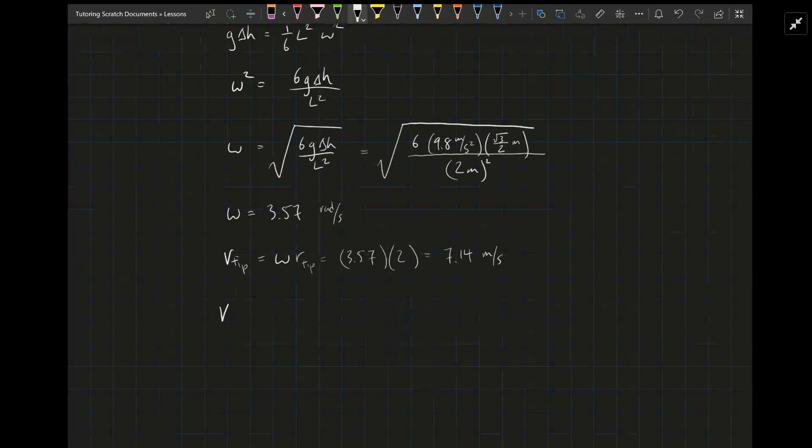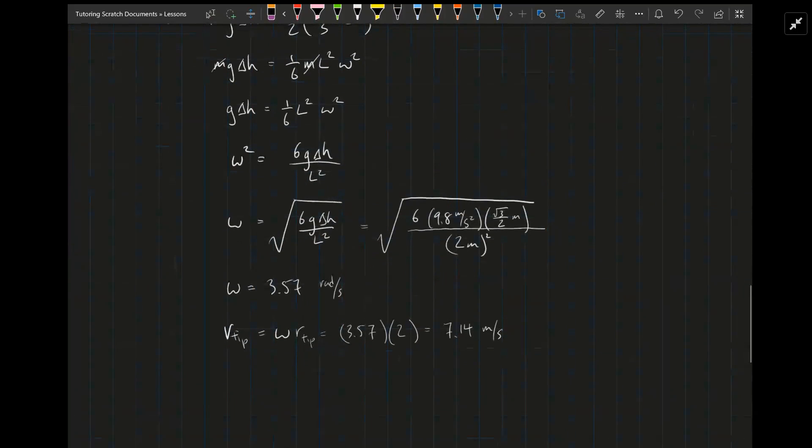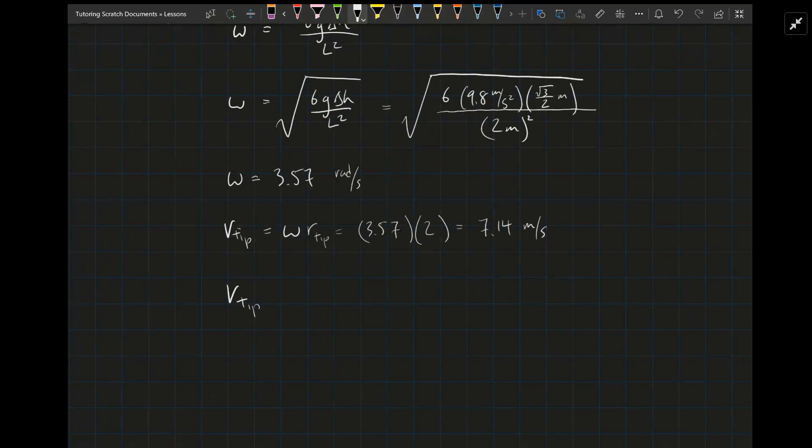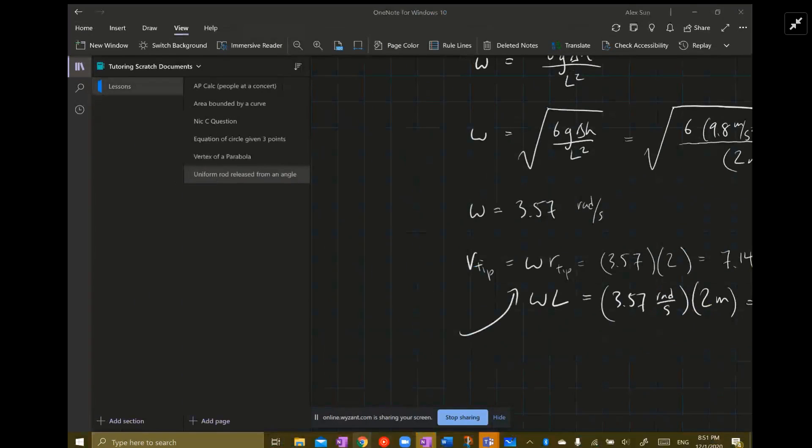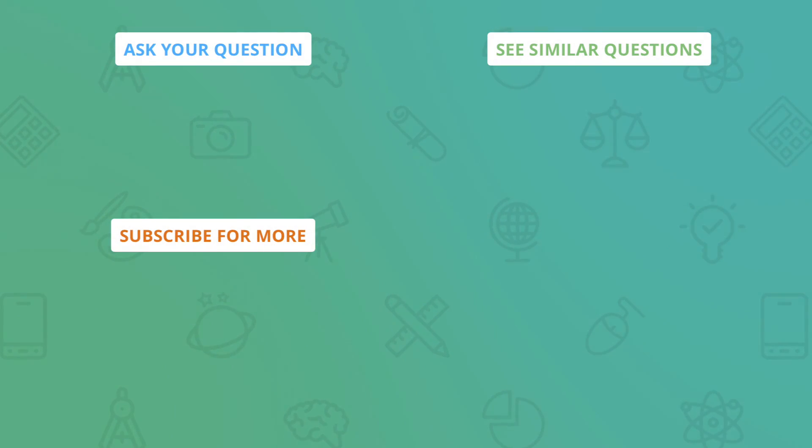We know that the velocity of any point along the rod is the angular velocity times that point's distance away from the origin. We're trying to find the velocity of the tip. The velocity of the tip is the angular velocity of the rod times the distance from the pivot, which is the length of the rod l. So omega l is 3.57 radians per second times 2 meters, which gives 7.14 meters per second. Thank you.